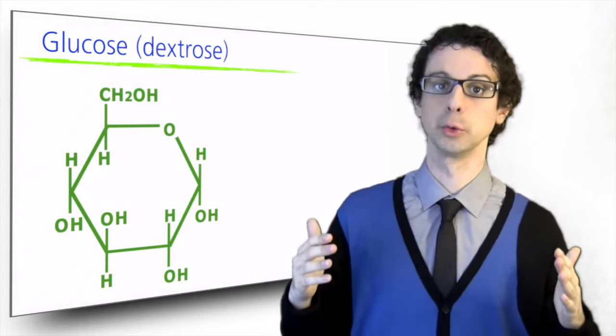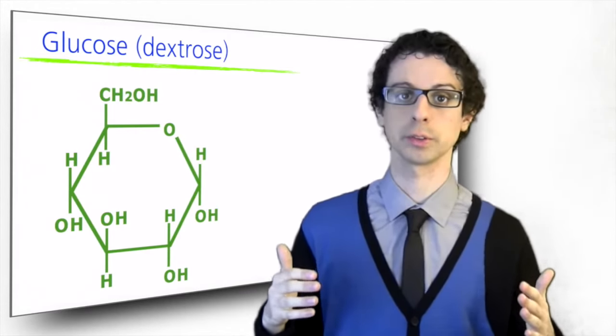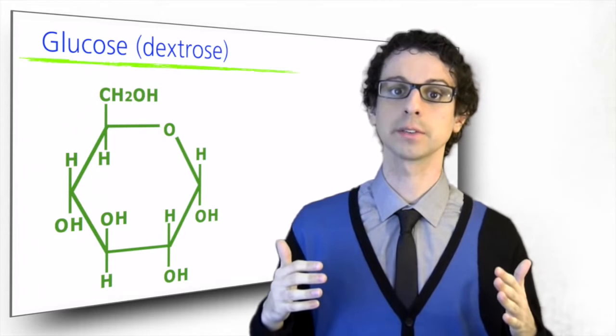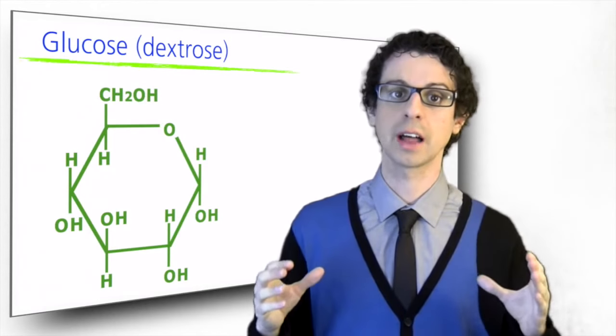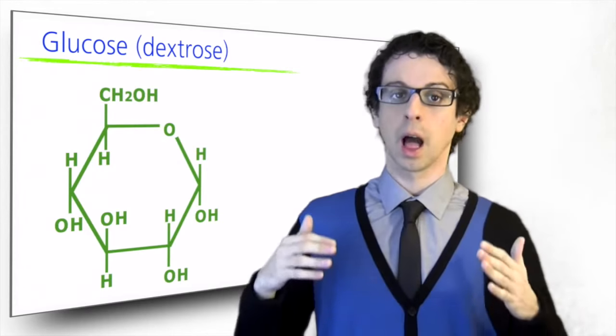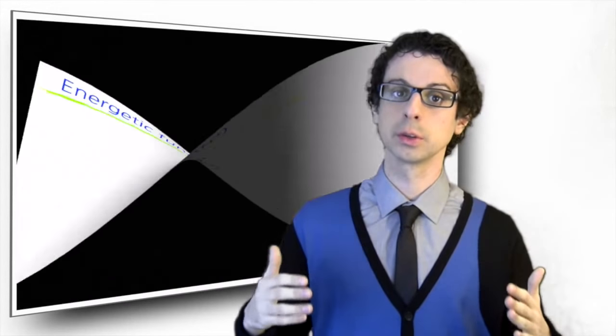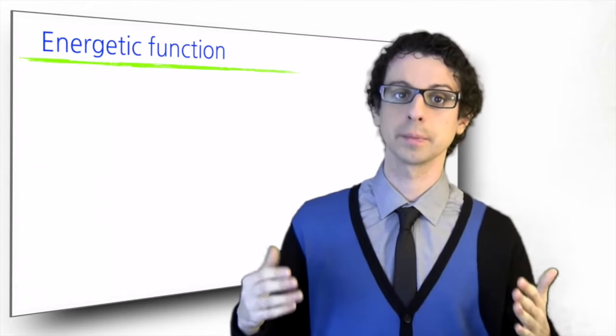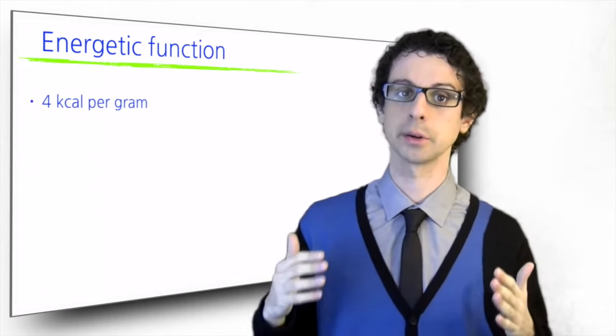This molecule is glucose, also called dextrose. It contains six atoms of carbon bound to each other and to atoms of hydrogen and oxygen. The primary function of glucose is, of course, an energetic one. It gives us four kilocalories per gram.